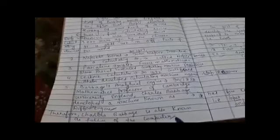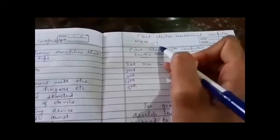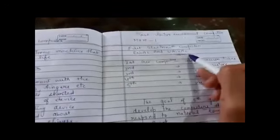Therefore, Charles Babbage is also known as father of the computer. First electromechanical computer is Mark I, and first electronic computers are ENIAC and UNIVAC.